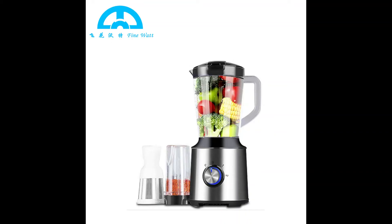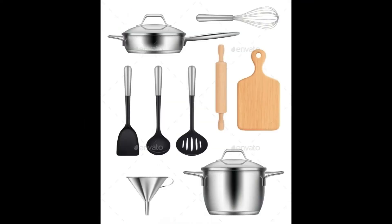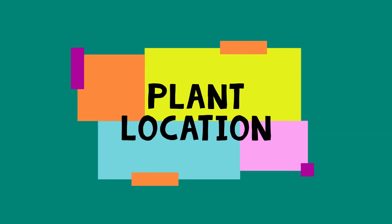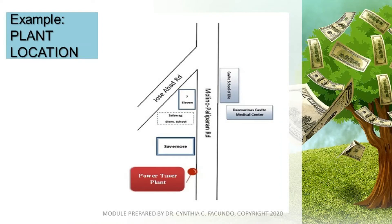In business, you need to prepare what particular or specific machines will be used for your business. Plant location refers to the choice where men — referring to you and your business creators — materials, money, machinery, and equipment are brought together for setting up a business or factory.